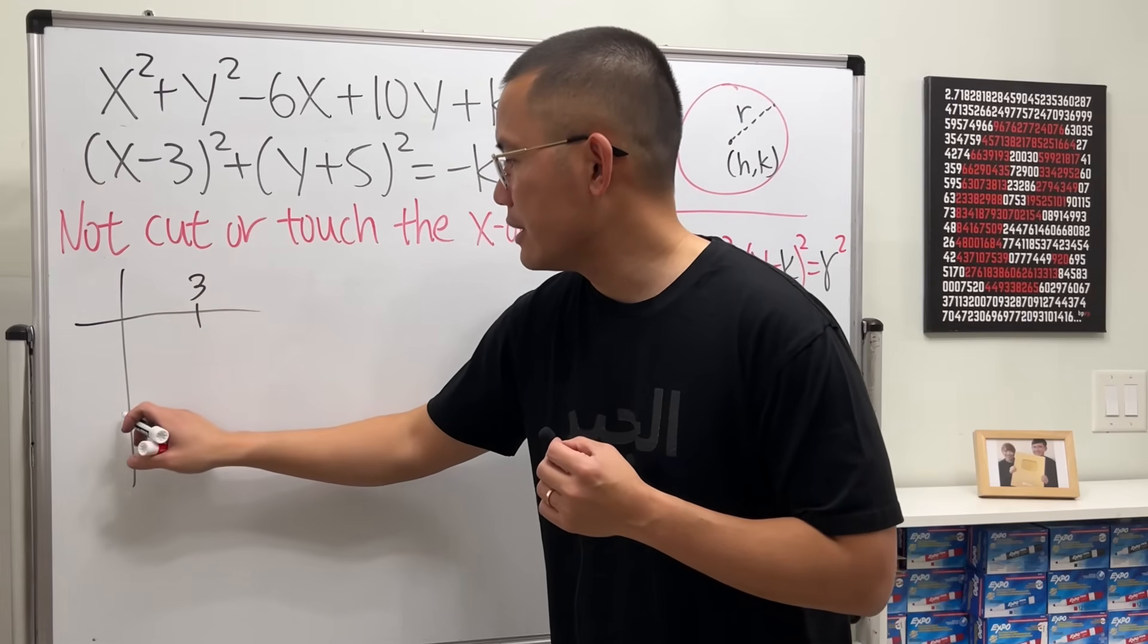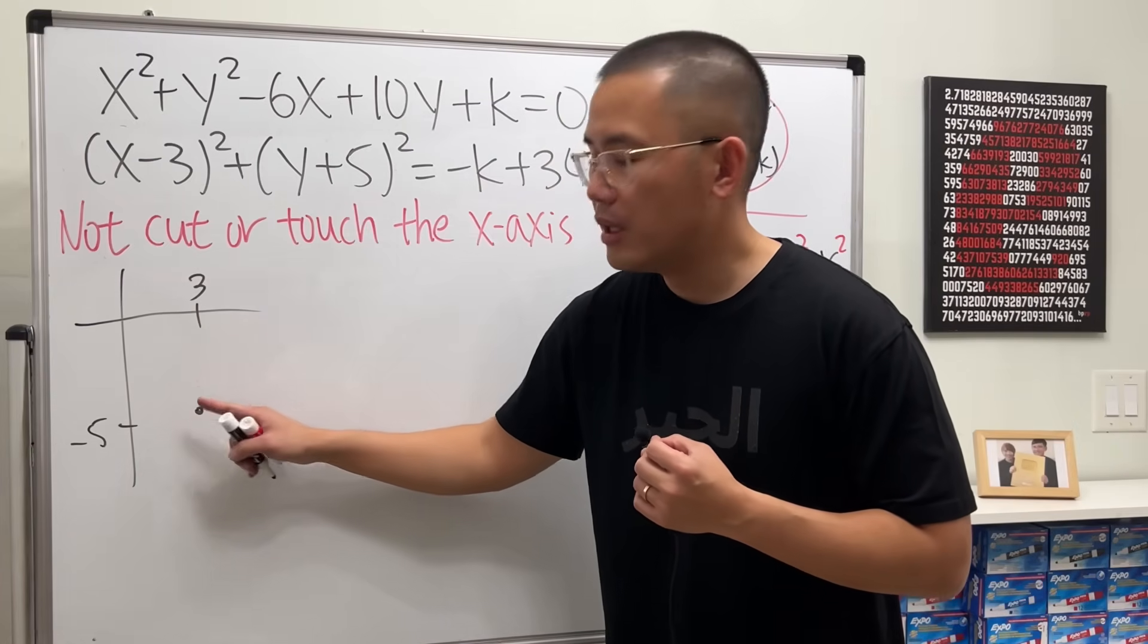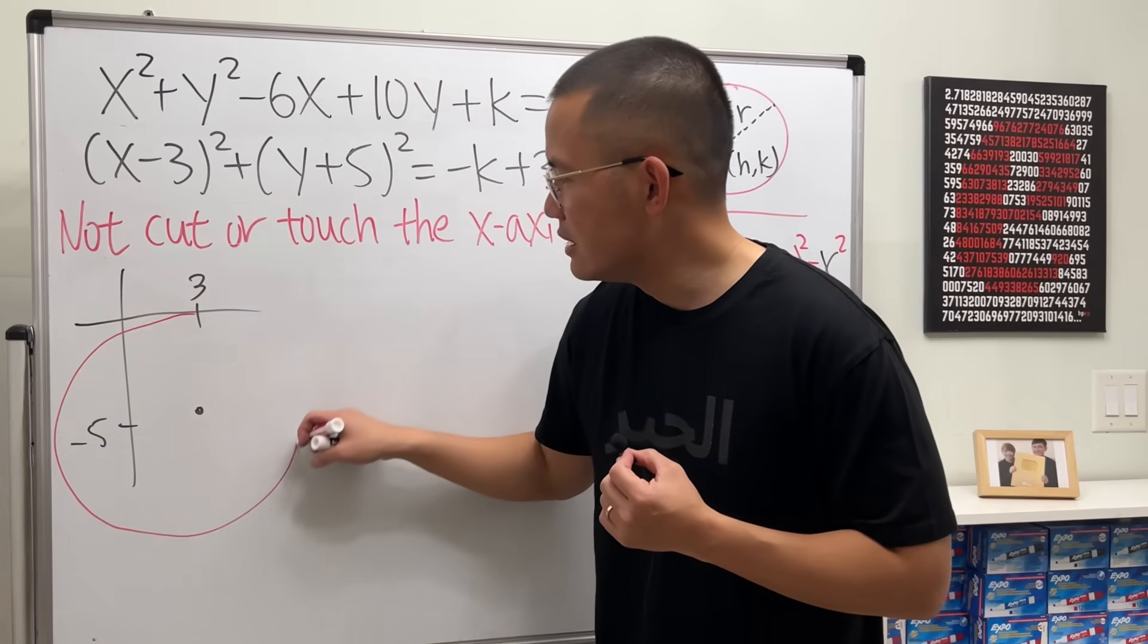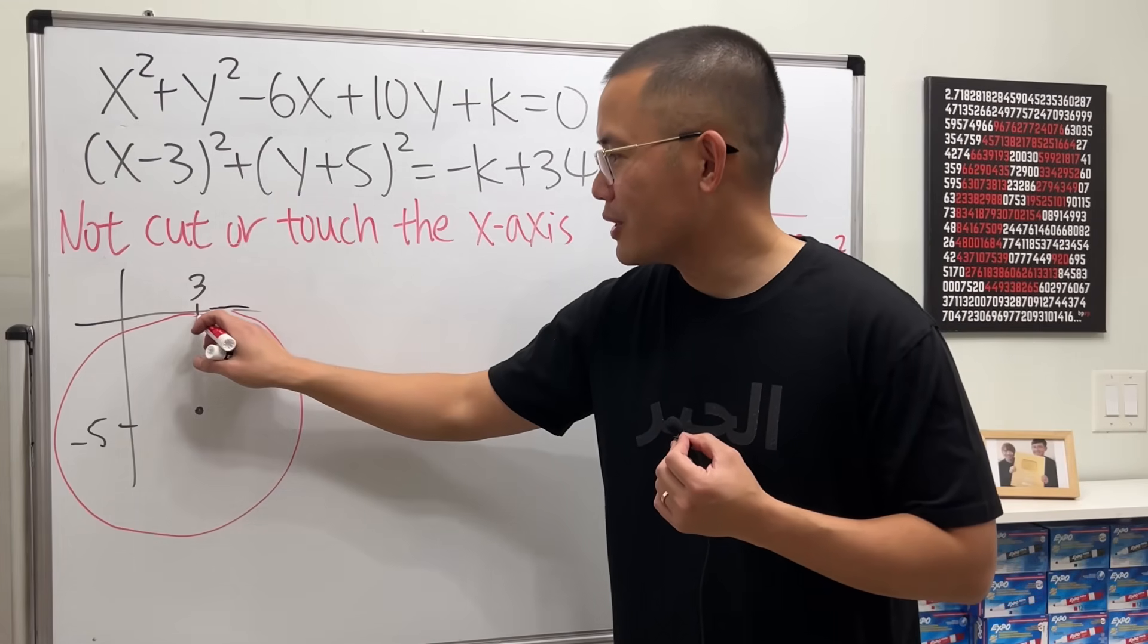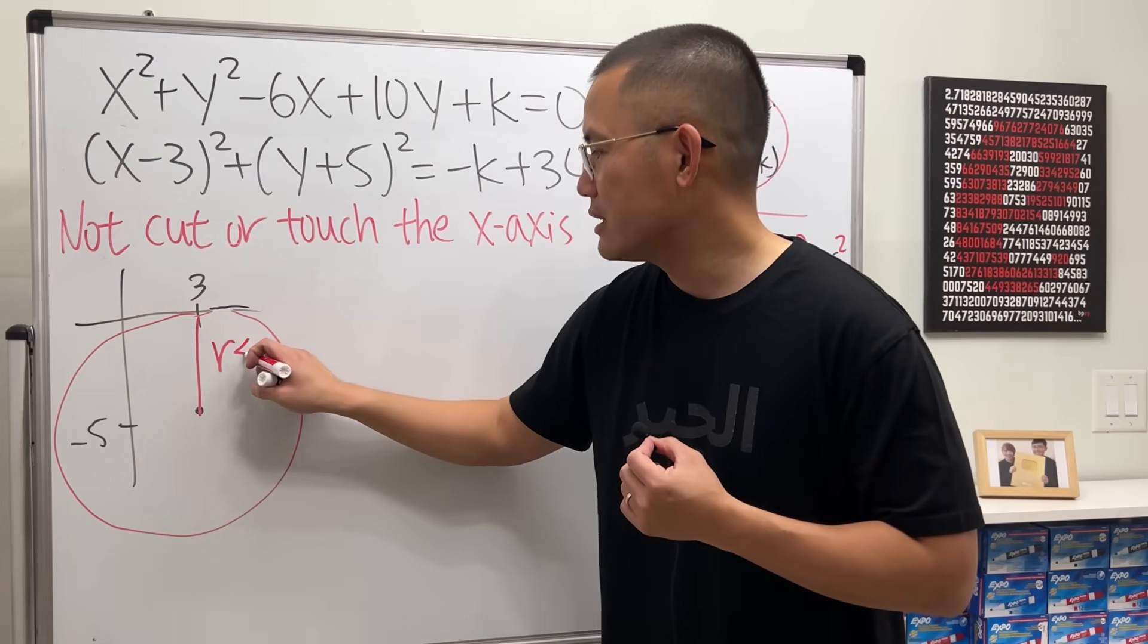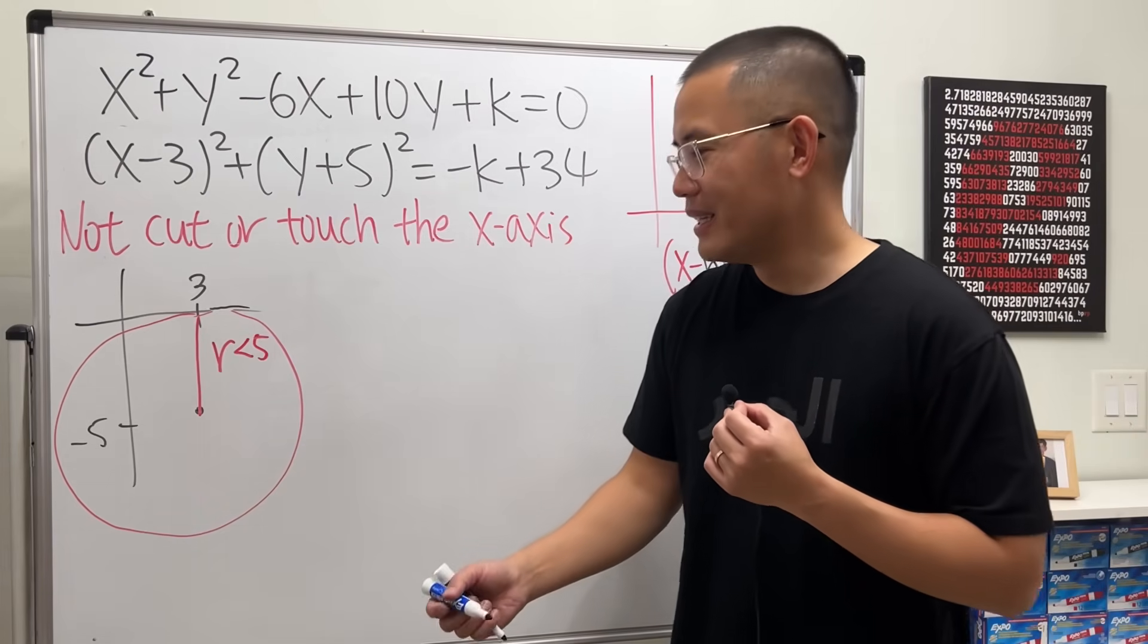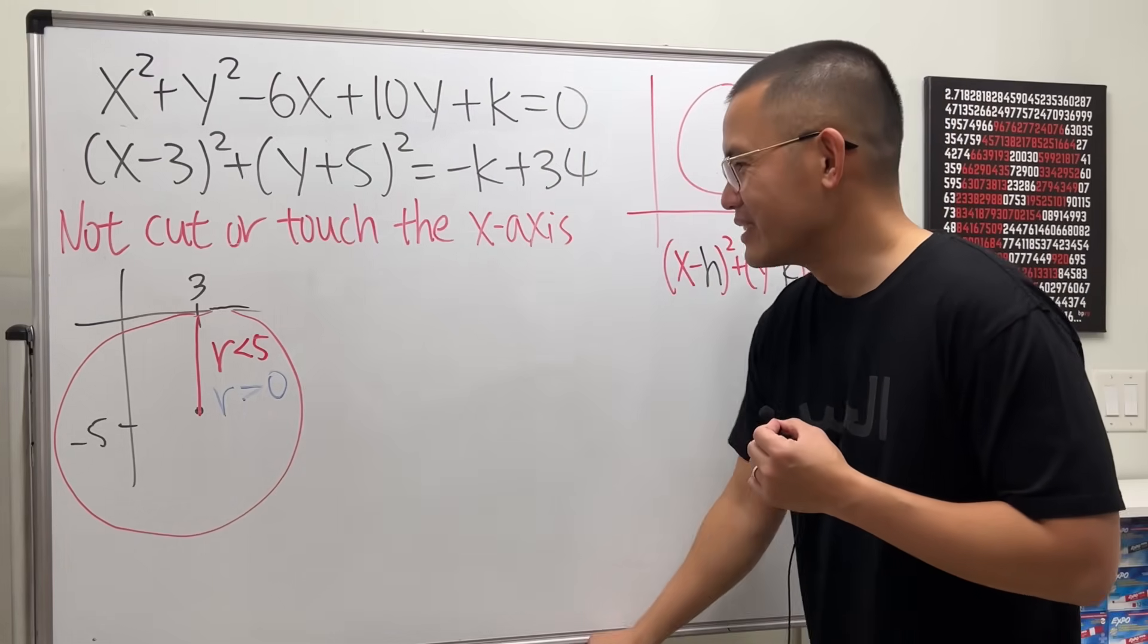Let's say here is 3 and here is negative 5. So here's the center. Well, you can draw a circle like this, or maybe a little bigger. But of course, the circle cannot be too big. Otherwise, it's going to touch the x-axis. So the biggest possible circle that you can draw is something like this. What's the condition, though? Well, you just have to make sure that the radius, which is from here to here, this distance would be 5. And you have to make sure the radius is less than 5. So that's one condition. But in fact, there's another condition, though. Because you have to make sure that this right here turns out to be a circle. So another condition is that r has to be greater than 0. So that's like the tricky part right there.